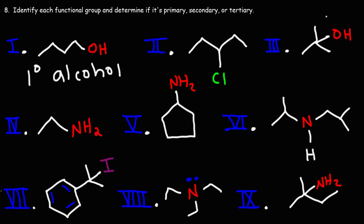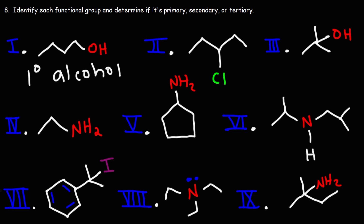What about number three? This too is an alcohol. The type of alcohol depends on the carbon atom on which the OH is bonded to. This carbon atom is attached to three other carbon atoms, which makes it tertiary. So this is a tertiary alcohol.